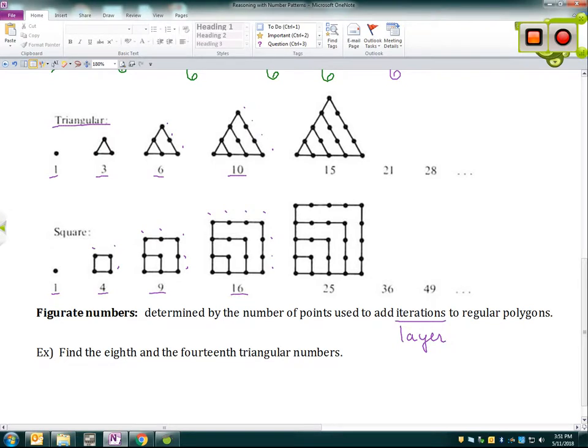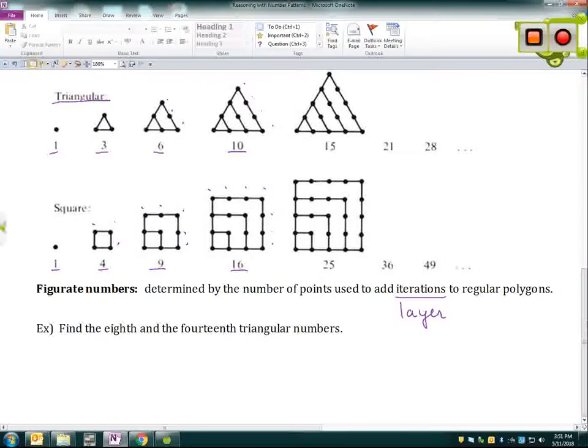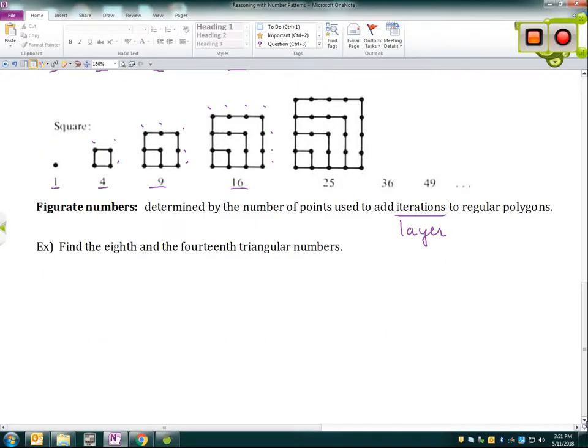So we have triangular and square numbers are the first two types of figurate numbers, and we don't need to necessarily continue drawing the figures. We actually have formulas that will find the nth term in the triangular or square numbers. So I'm going to use the formula for our triangular numbers as an example here, because I want the eighth and the 14th triangular numbers. So I want when n equals eight and when n equals 14. So here's the formula for triangular numbers. It is t sub n equals n times n plus one over two.